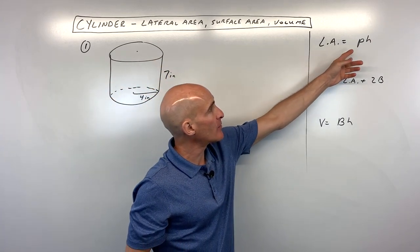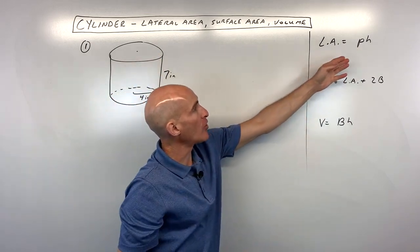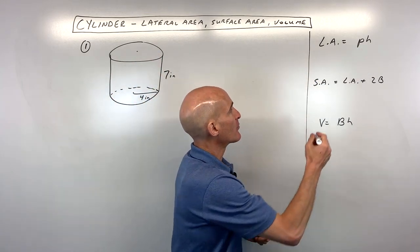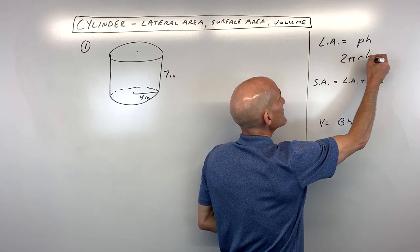So what you can do is you can take the perimeter of the base, the perimeter of the circle, and multiply it by the height. The perimeter of a circle is just the circumference, that's 2πr, times the height.